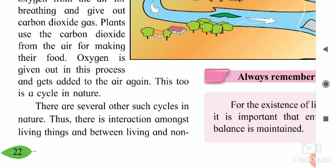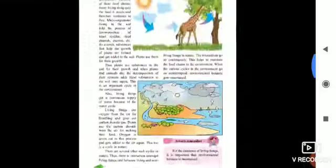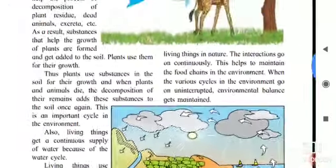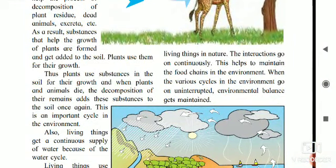Thus there is interaction amongst living things, and between living things and non-living things in nature. These interactions go on continuously and help to maintain the food chains in the environment. When the various cycles in the environment go on uninterrupted, environmental balance gets maintained.